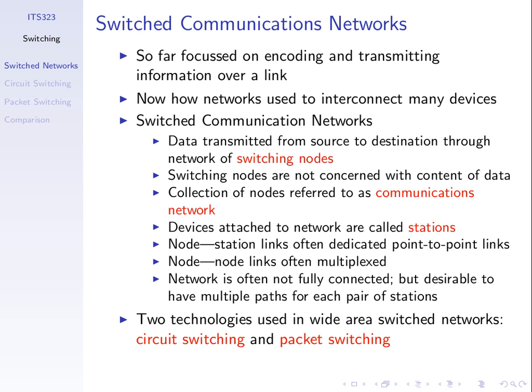There are two technologies used. We distinguish between what's called circuit switching and packet switching — how does this node, when it receives data, forward it through the network? There are two different approaches. In fact, in packet switching, we'll even break it into two more sub-approaches: datagram packet switching and virtual circuit packet switching. So we'll end up with three approaches: circuit switching, datagram packet switching, and virtual circuit packet switching.